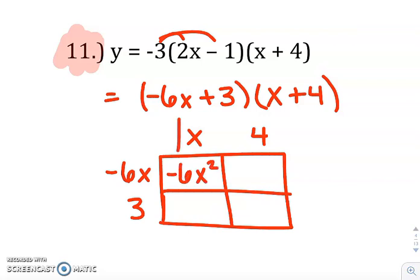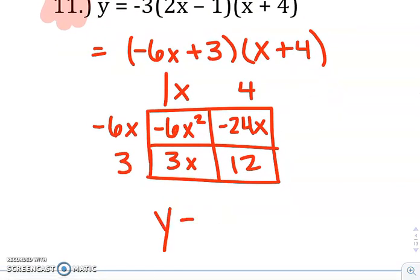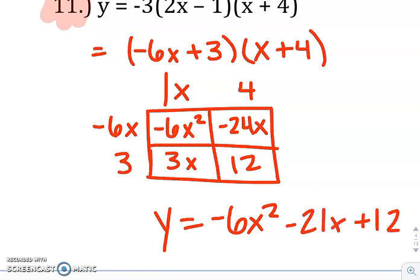If it helps, you can put that coefficient of 1 there. So negative 6 times 1. Negative 6x times x, x squared. Negative 6x times 4, negative 24x. 3 times 4 is 12. So your equation in standard form will be negative 6x squared, 3x plus negative 24x is negative 21x plus 12.